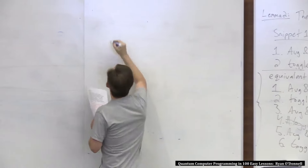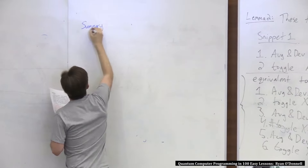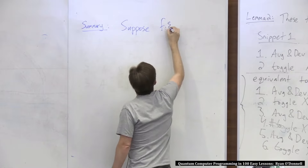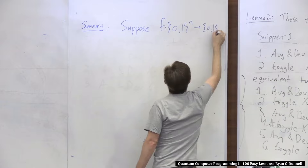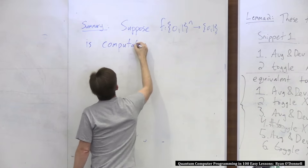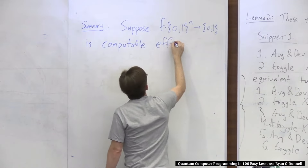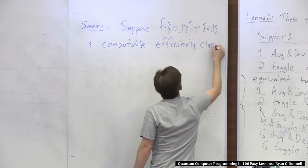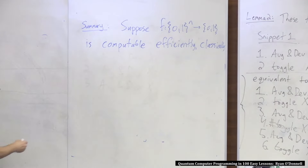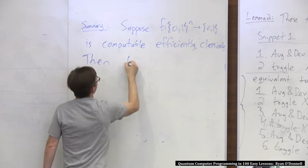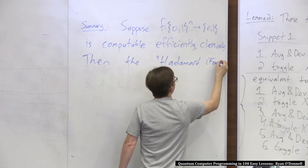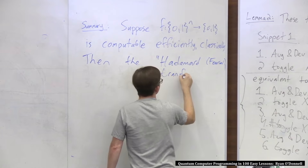Summary. Putting everything together, suppose you have a Boolean function f, and you can compute it classically with good old regular code efficiently. Then what happens if you use this paradigm — this Hadamard transform, maybe some kind of Fourier transform — this transform algorithm or paradigm?